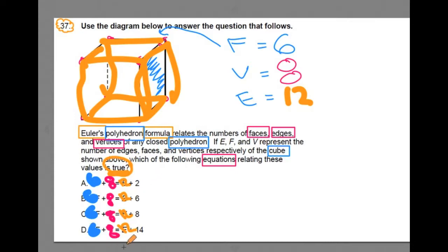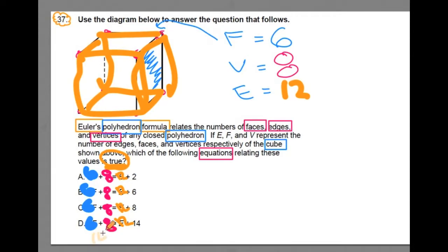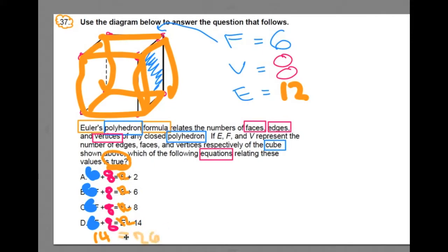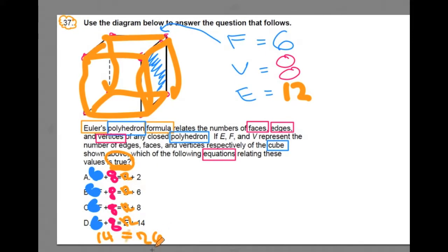Let's look at D. Six plus eight, what does that get you? Well, that gets you fourteen. Twelve, twelve plus fourteen, what does that get you? Well, that gets you twenty-six. Does fourteen equal twenty-six? No, that's not true.